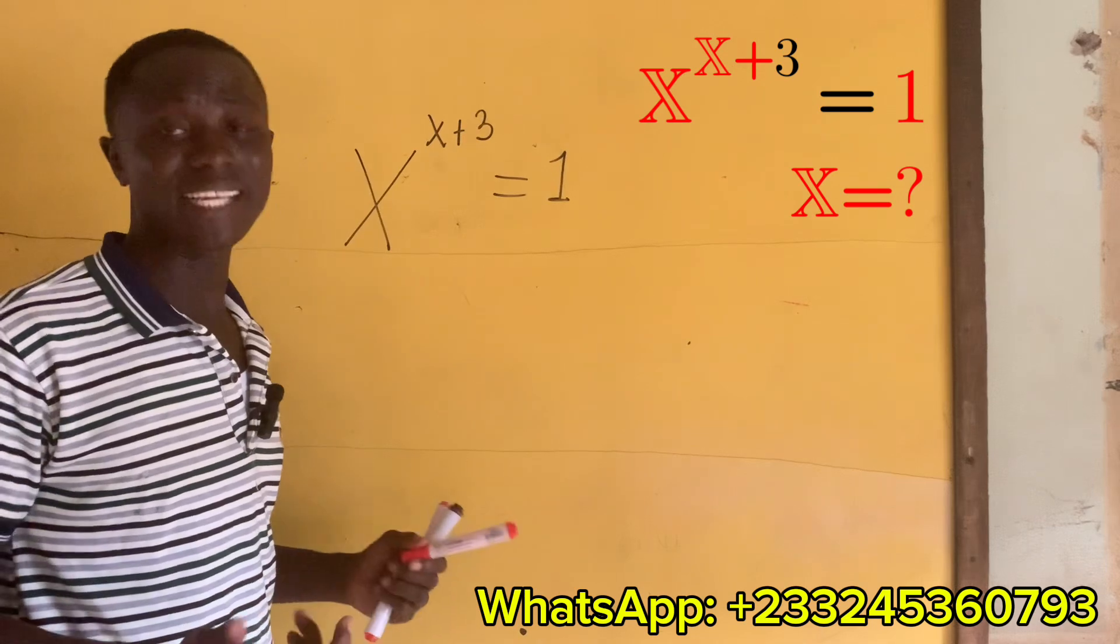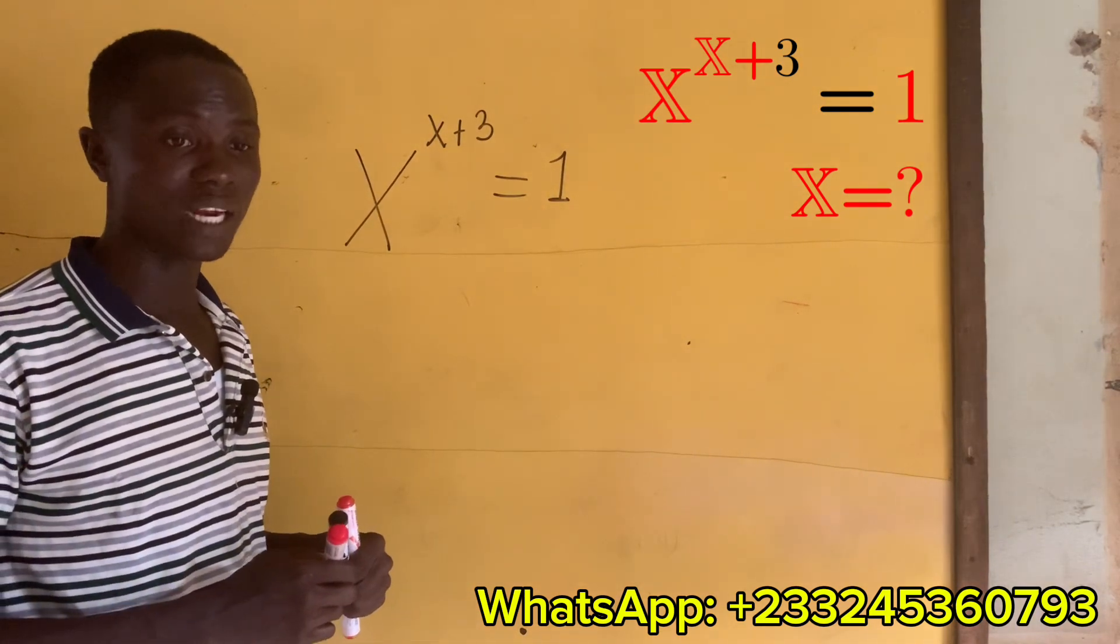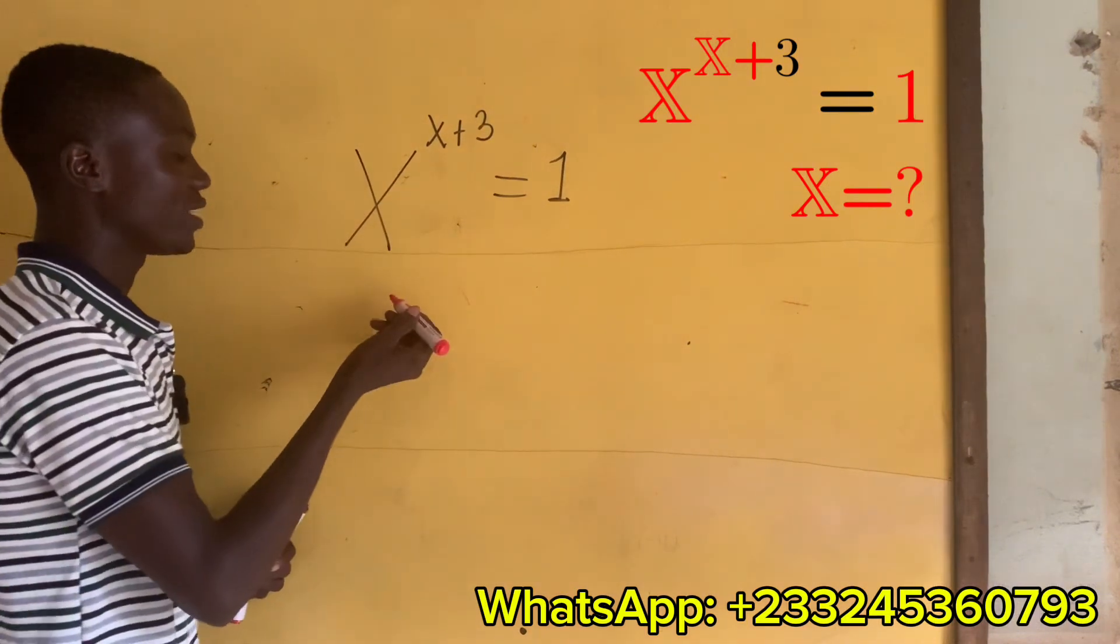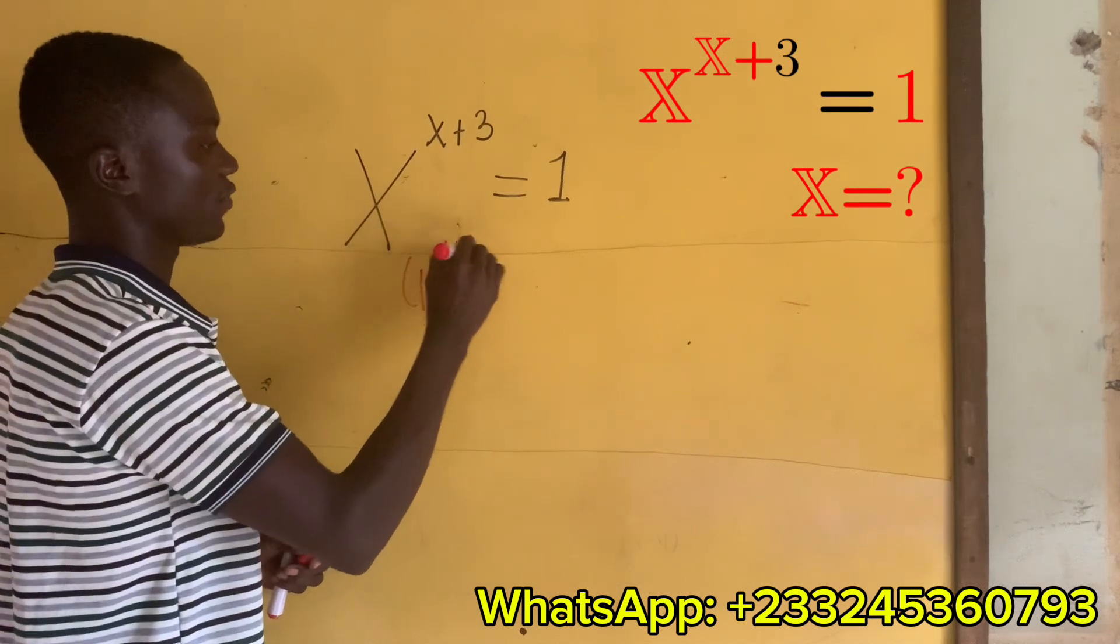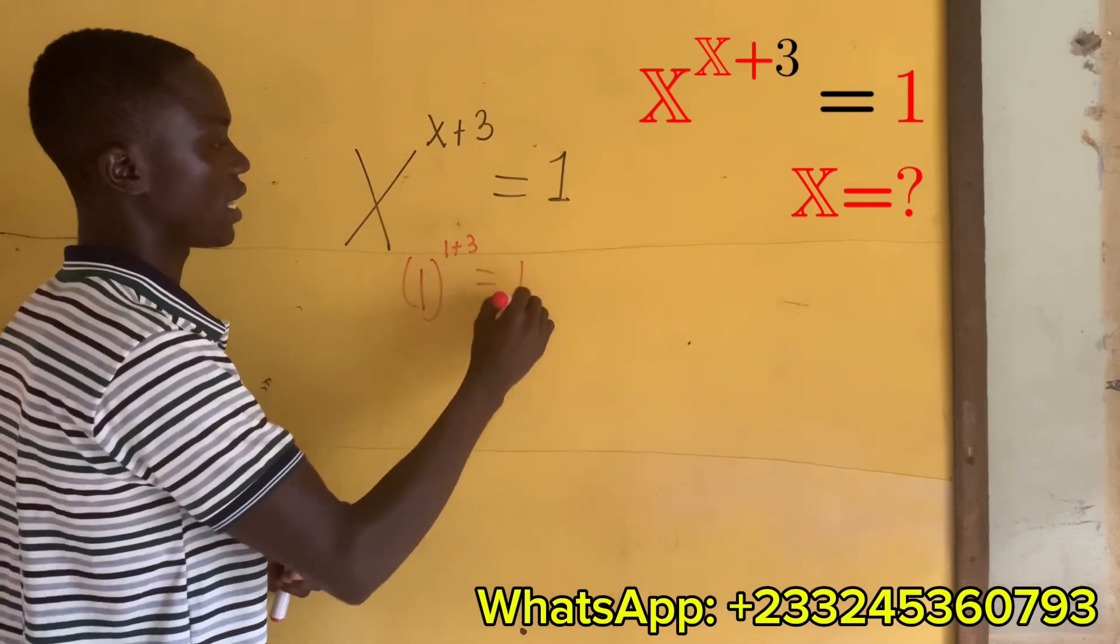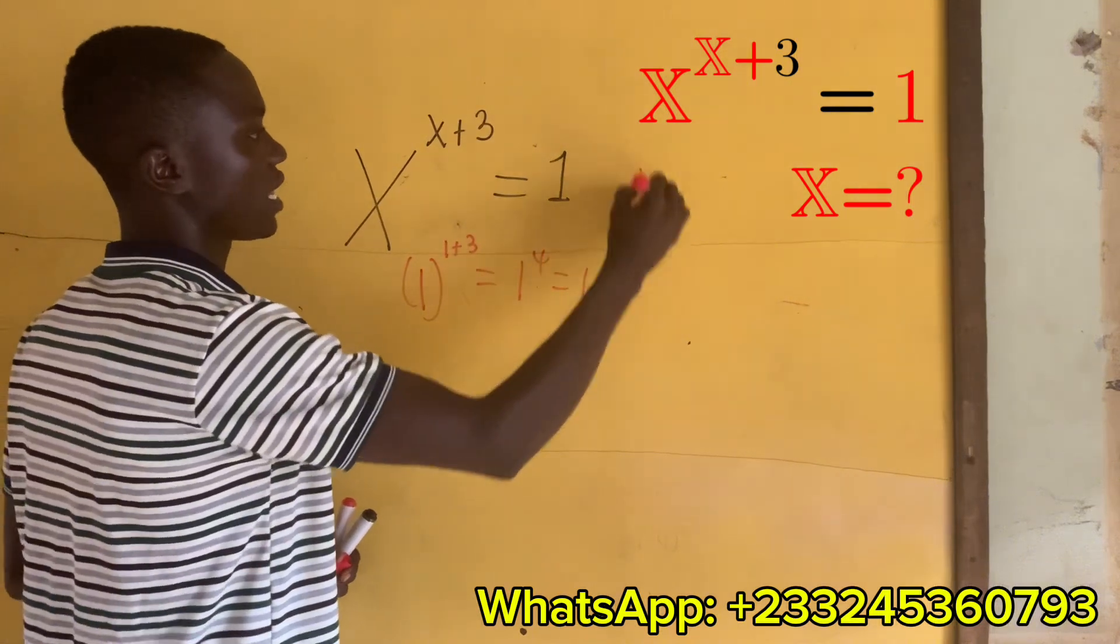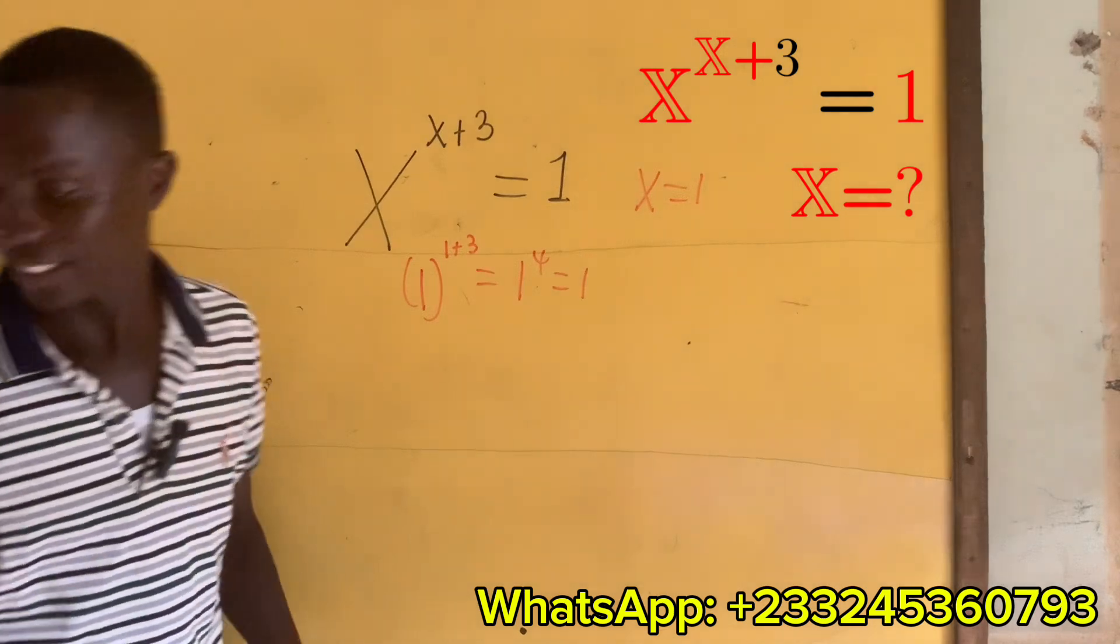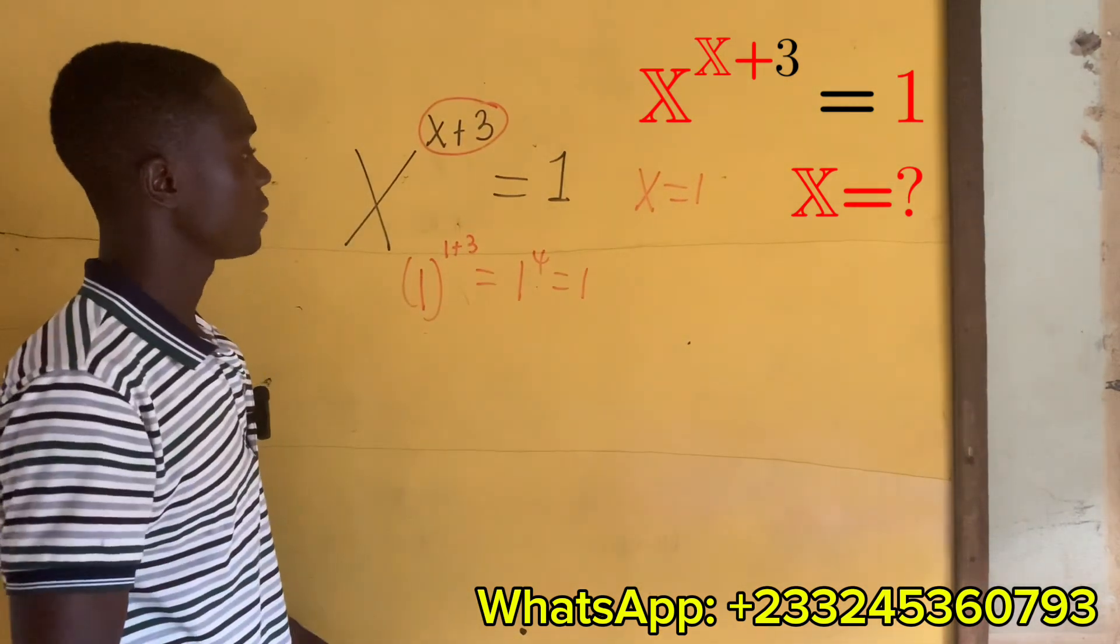1 exponent 0 is 1, 1 exponent 2 is 1, and 1 exponent x plus 3 is also 1. So if I have 1 exponent 1 plus 3, I'm gonna get 1 exponent 4, which is 1. So here you're gonna take x equals 1.